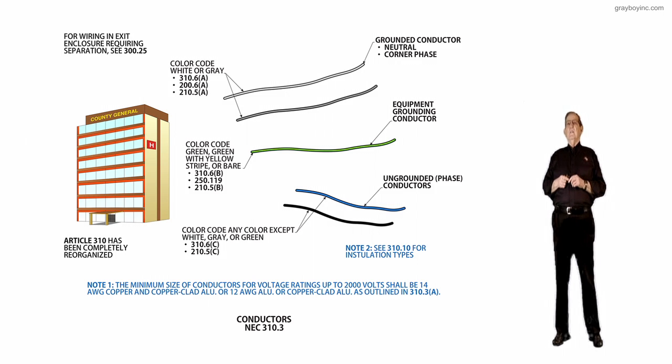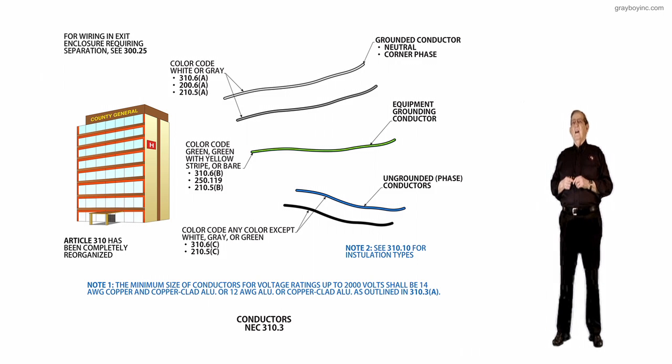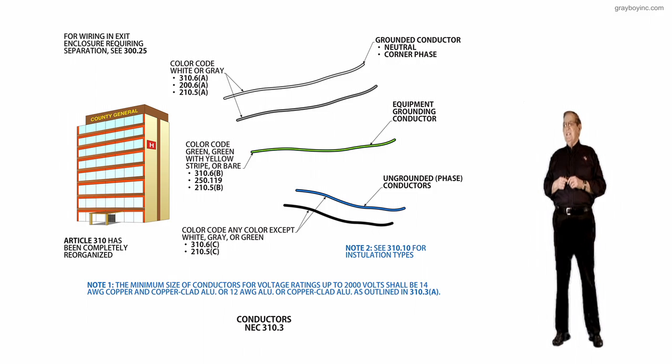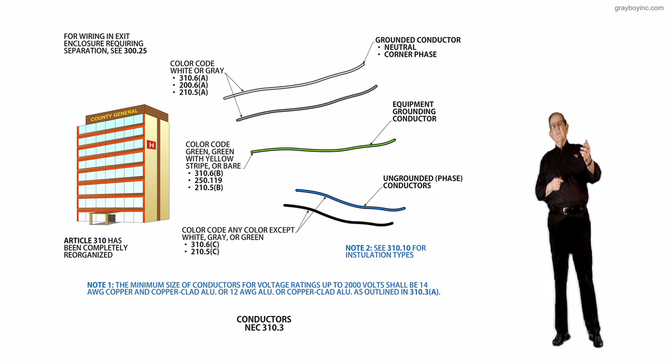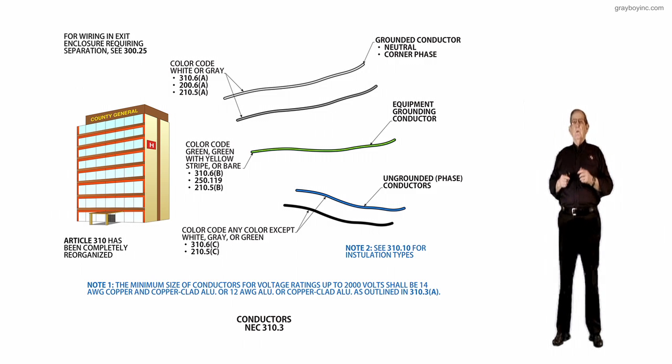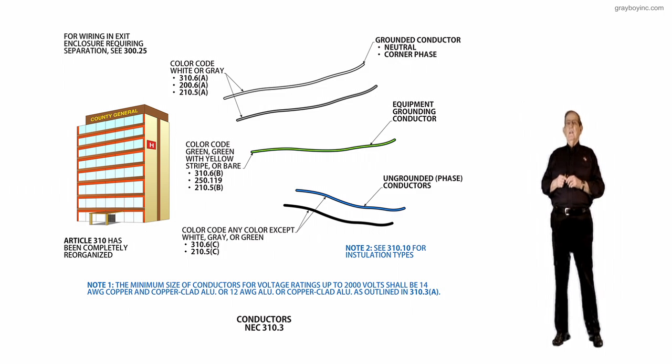And if you wanted to see exactly how insulation can be used, then you would review 310.10A through D and you'll pick up dry, damp, wet, and conductors exposed to the sunlight. The great part is that 310.10A through D will tell you where that insulation can be used.